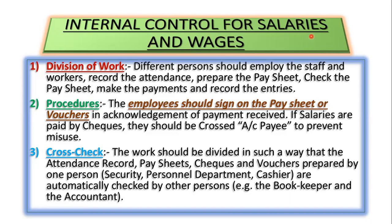Different persons should be employed for different tasks. One person will record attendance, another will prepare the pay sheet — calculating how much to pay, checking how many days each worker came. For example, if out of 30 days a worker was absent for 7 days, payment will be for only 21 days. A separate person should also handle recording all entries. There should be a proper division of work, not concentrated in one person's hands.